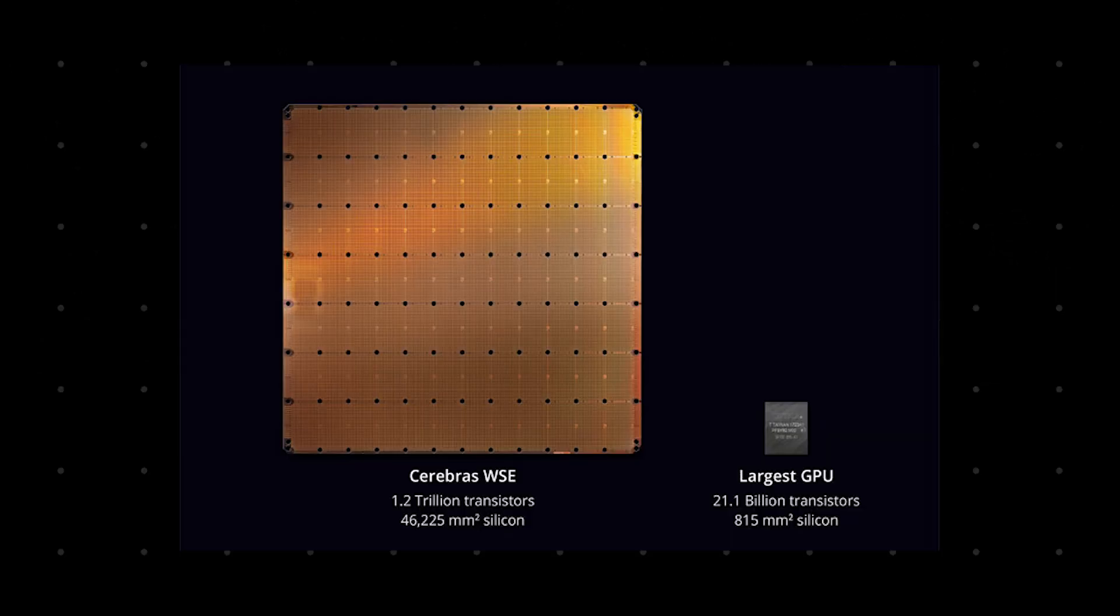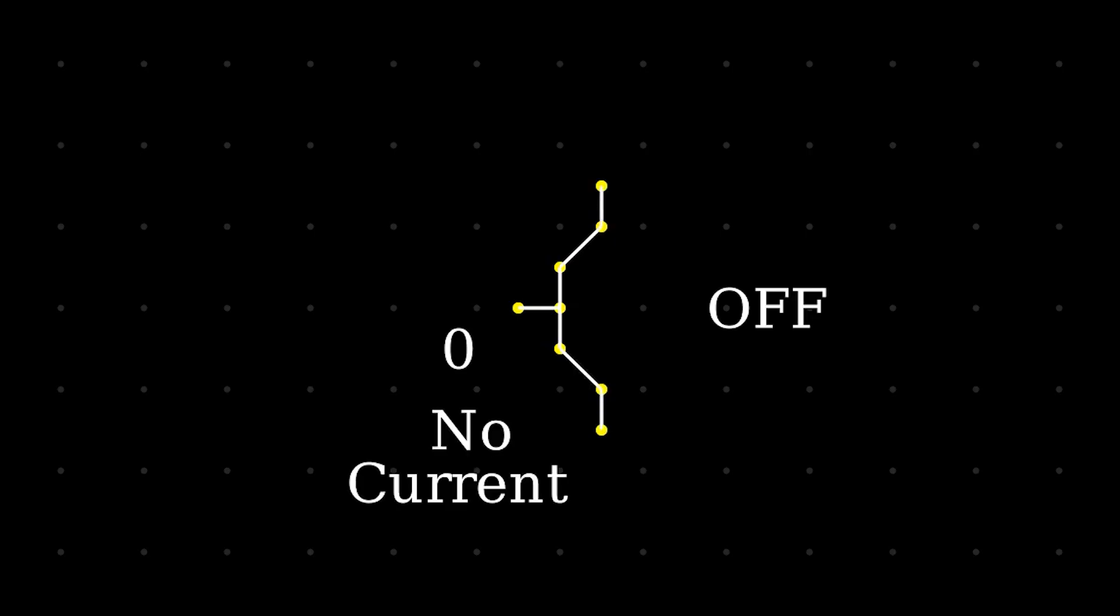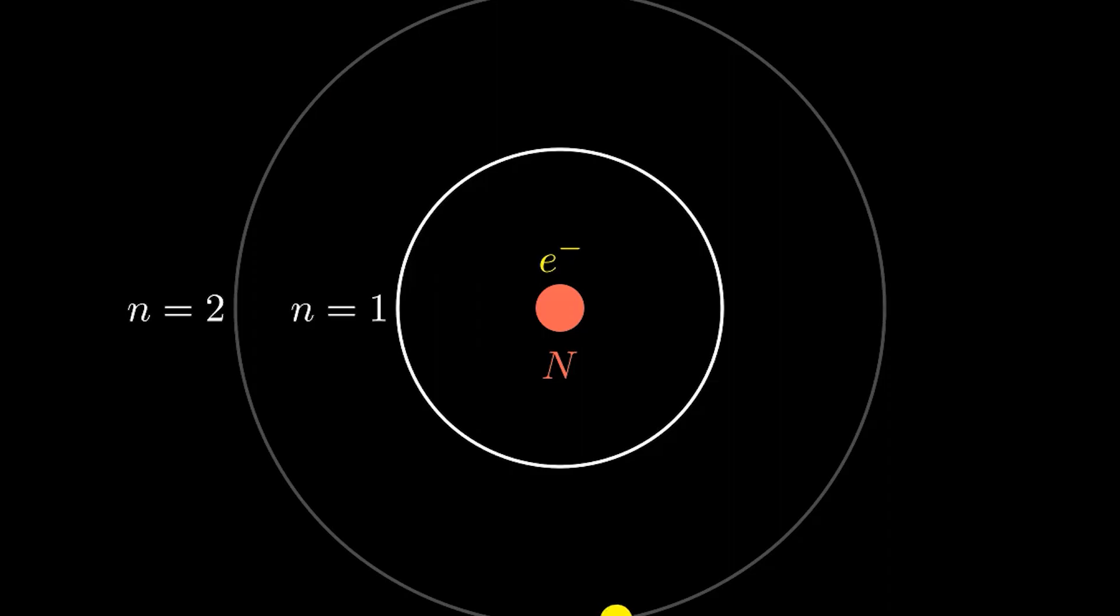So a normal classical bit made out of a transistor can be in two states, either zero or one. In the zero state, the transistor is off, and in the one state, the transistor is on. Quantum bits, or qubits for short, must also be able to have two states, a zero and a one state. The difference is that quantum computers must also be able to be in a superposition of the zero and one state.